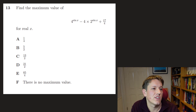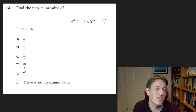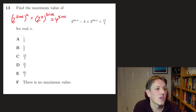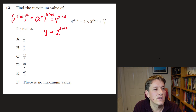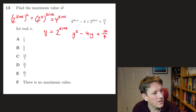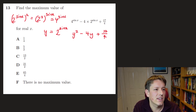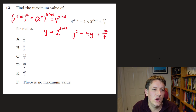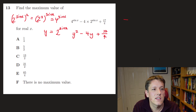Question 13 is another disguised equation — you have to learn to spot these. The key thing is that 2^(sin²x) is the same as (2^(sinx))², which equals 4^(sinx). So if I write y = 2^(sinx), we get a disguised quadratic: y² − 4y + 17/4.